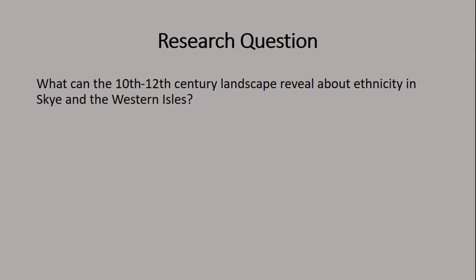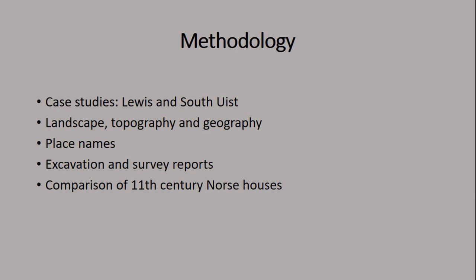So my research question for this presentation is: what can a 10th to 12th century landscape reveal about ethnicity in Skye and the Western Isles? The methodology uses two case studies, Lewis and South Uist, and looks at landscape, topography, geography, and place names — I'm not a place name specialist and I work with place name specialists, but it is quite difficult. I also use excavation and survey reports, and I'm going to compare 11th century Norse houses, which are only a handful, but are quite significant.